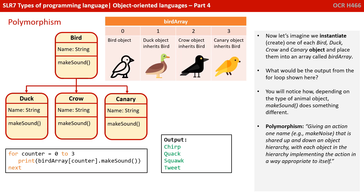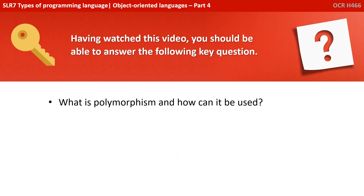As a summary: polymorphism is the idea of giving an action one name — for example, make noise — that is shared up and down an object hierarchy, with each object in the hierarchy implementing the action in a way appropriate to itself. Having watched this video, you should be able to answer the following key question: what is polymorphism and how can it be used?